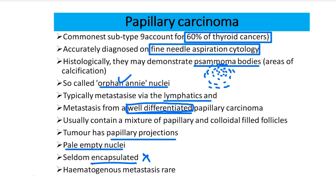Hematogenous spread is very rare in papillary carcinoma. Comparing papillary and follicular carcinoma — they are essentially opposites. Papillary carcinoma is non-capsulated, while follicular carcinoma is encapsulated. Papillary carcinoma spreads via lymphatics, whereas follicular carcinoma spreads via hematogenous metastasis. These distinctions are very important.